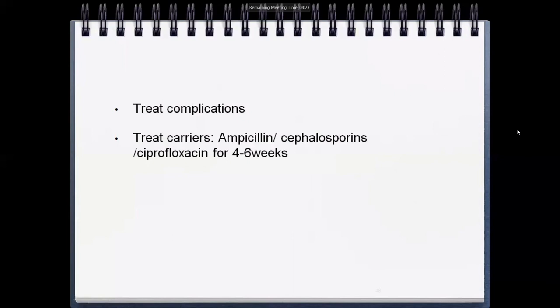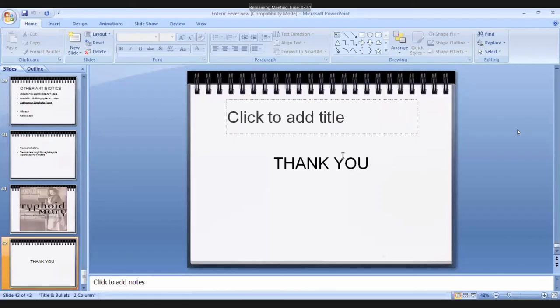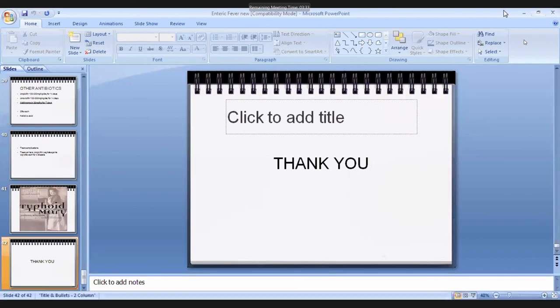Along with treating the acute illness, complications must be managed and carriers must be treated. For treating the carrier state, ampicillin or cephalosporins (cefixime or cephalosporins) are given for 4 to 6 weeks. Typhoid Mary was a famous chronic carrier — she was a chef who spread typhoid to her community, which is why she is remembered by name. Thank you for joining the class.